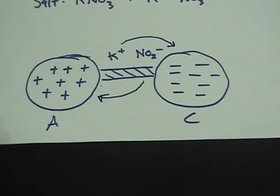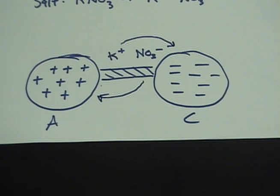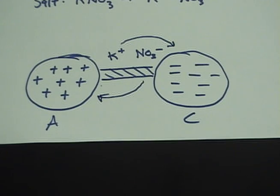So the potassium ion would want to go to where the cathode is, and the negative ion would go to where the anode is. That, in turn, balances the charges so that we can still create a flowing current.